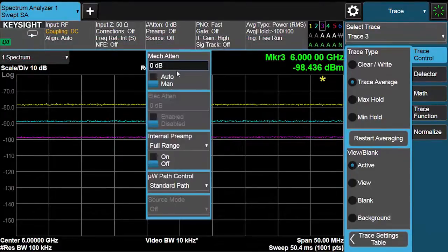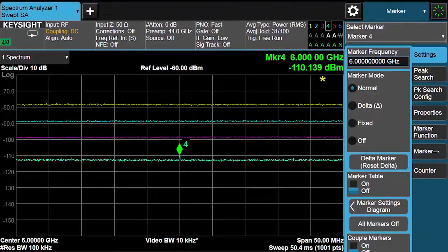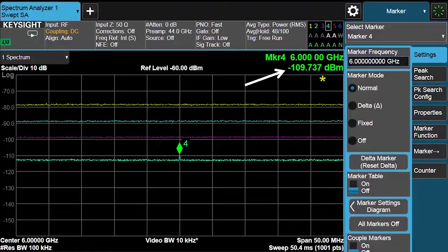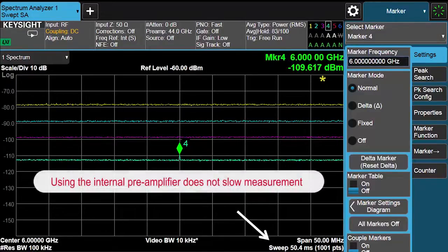So I'll go ahead and turn on the internal pre-amp, and we'll see the tremendous improvement in sensitivity. So now you can see there's a low level spur popping up at marker 4. We're getting a reading on that marker of minus 110 dBm. Notice that when you use the internal pre-amplifier, the sweep speed doesn't change. Using the internal pre-amplifier does not slow down your measurement.